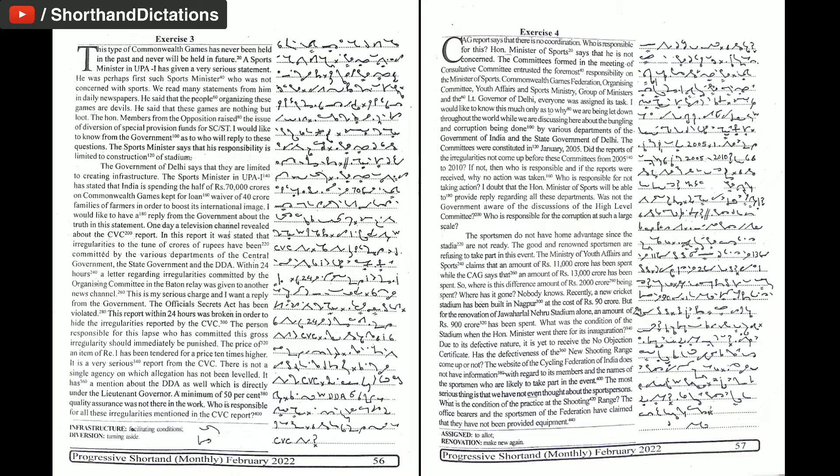The government of Delhi says that they are limited to creating infrastructure. The sports minister in UPA 1 has stated that India is spending half of Rs. 70,000 crores on Commonwealth Games kept for loan waiver of 40 crore families of farmers.